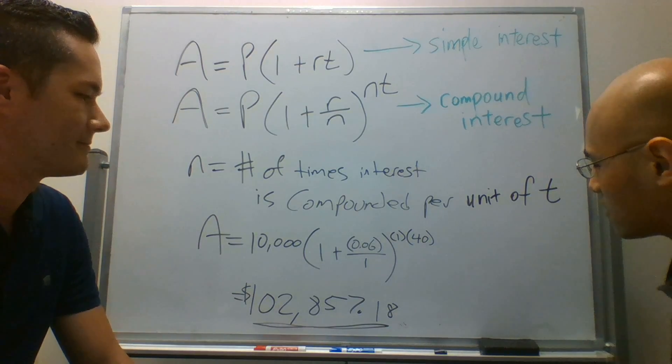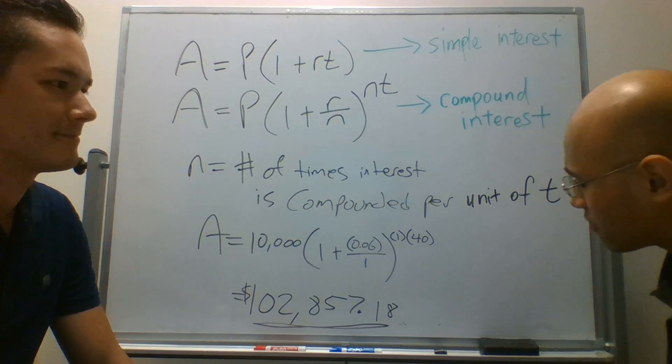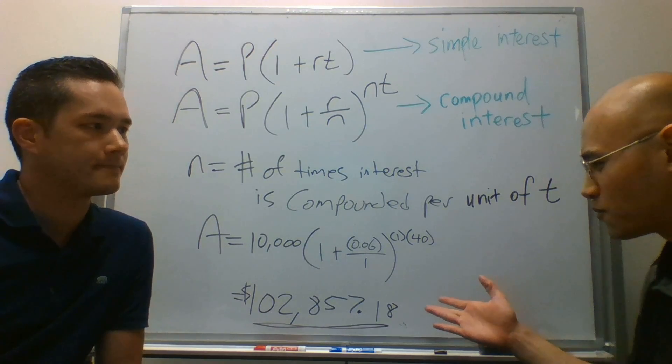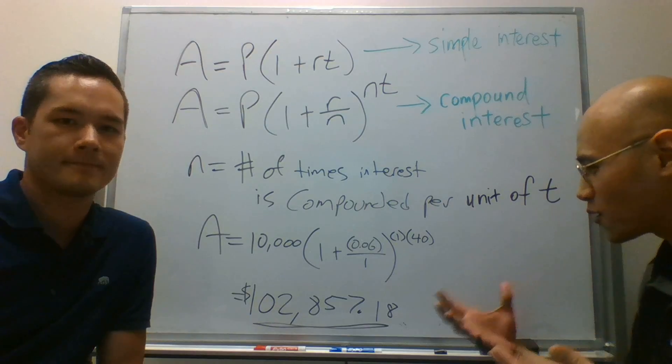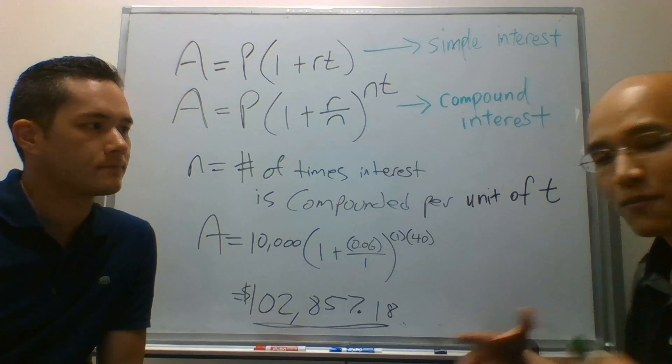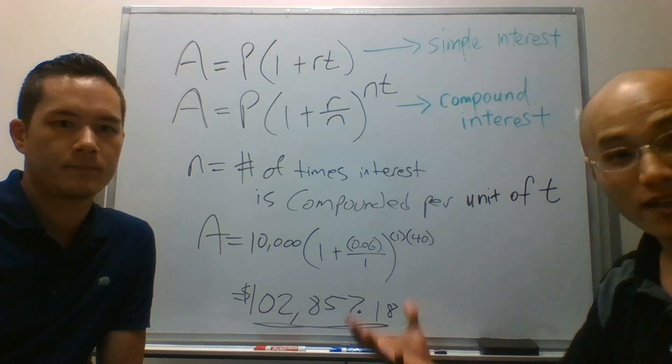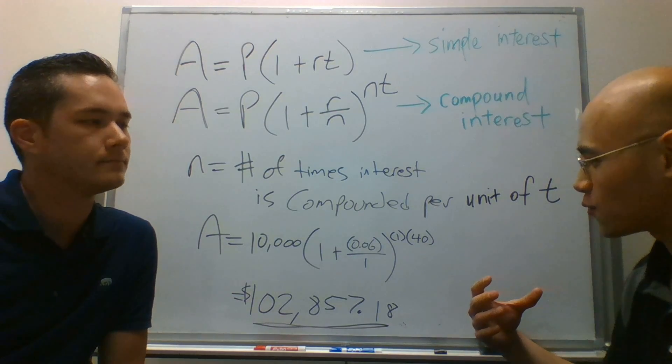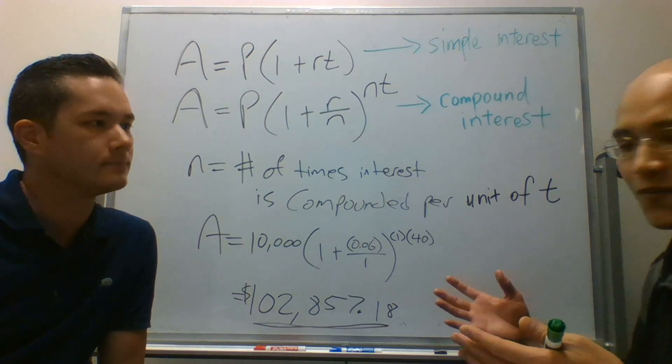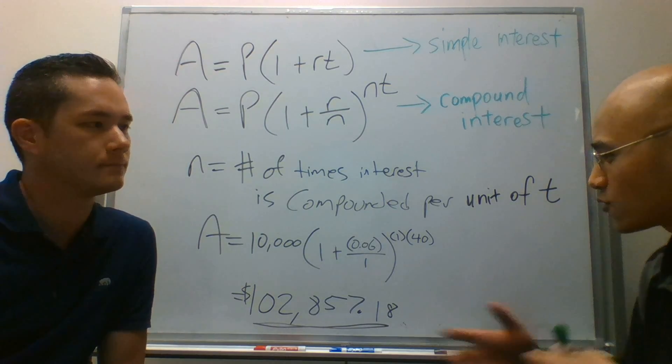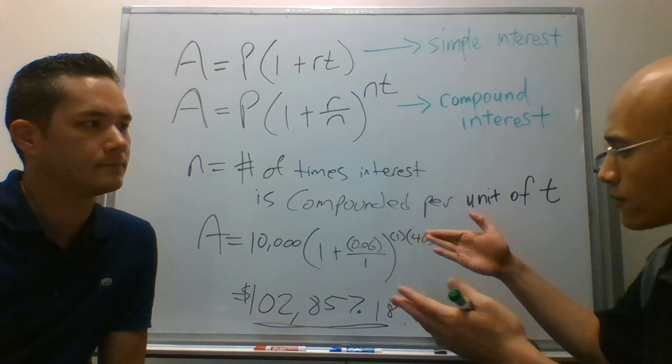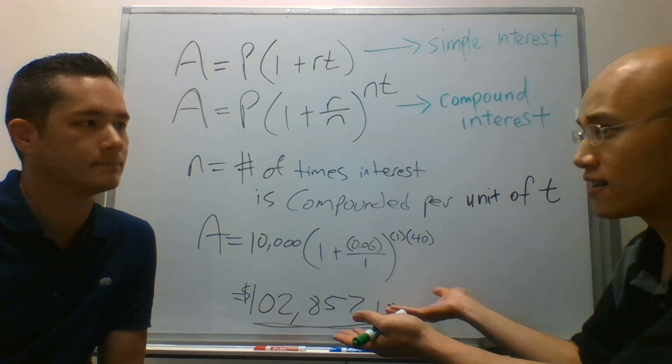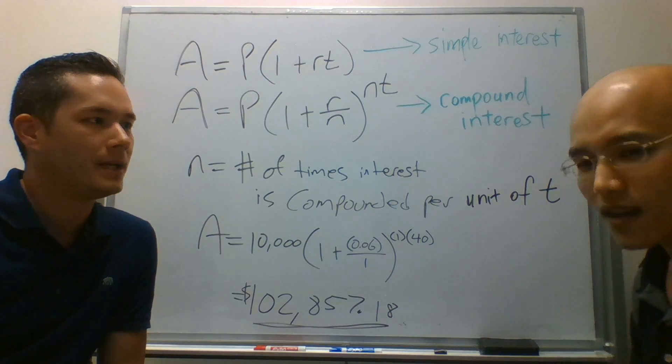So I think this is partially a math and finance lesson, but it's also about the importance of investing your money early and having the discipline to not take it out during these 40 years and just letting compound interest work its magic over time so that you'll end up with a really nice nest egg.